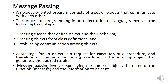The next concept is message passing. In OOP, the entire problem is divided into different objects, and these objects communicate with each other. The steps involve: creating classes that define objects and their behavior, creating objects from class definitions, and establishing communication among objects. A message for an object is a request for execution of a procedure, which invokes a function in the receiving object. Message passing involves specifying the name of the object, the function name, and the information to be sent.